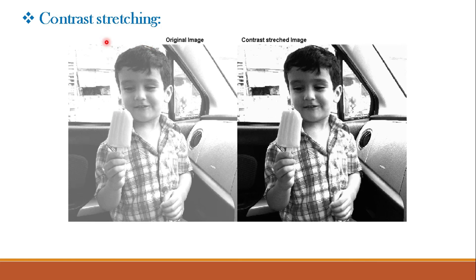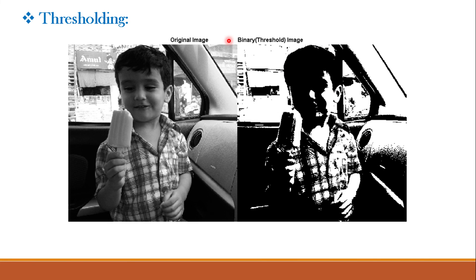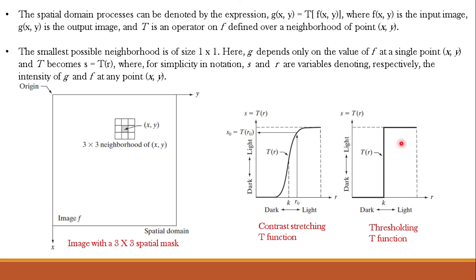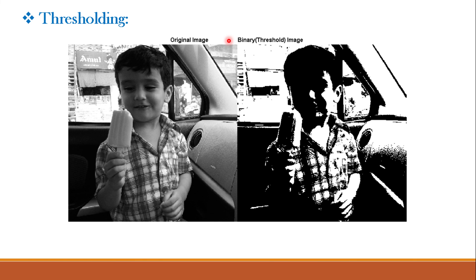Contrast stretching is applied to a washed-out image, resulting in a high contrast image. Similarly, applying a thresholding function to the original image produces an image having only two values — 1 and 0, that is black and white. Let us perform these functions in MATLAB.